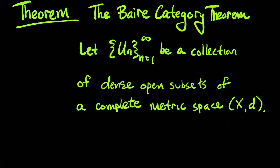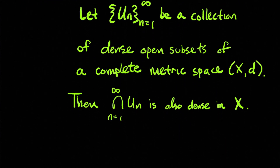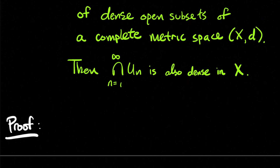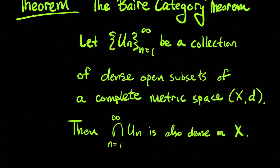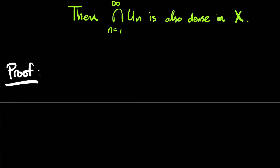The Baire Category Theorem states: if you have a countable collection U_n — indexed by the natural numbers — of dense open subsets of a complete metric space X with metric d, then the intersection of all of these dense open subsets is still dense in the metric space. So each U_n has the property of being dense, and when you take their intersection, it is still dense. We're going to get into the proof, and we'll give a nice constructive proof that even critics of the axiom of choice would approve of.